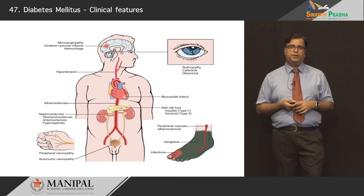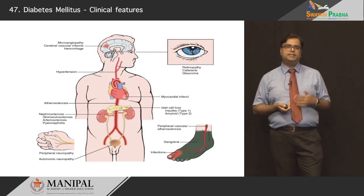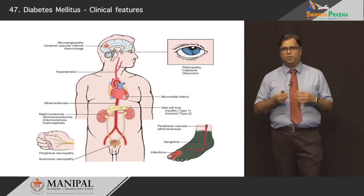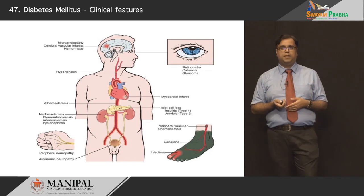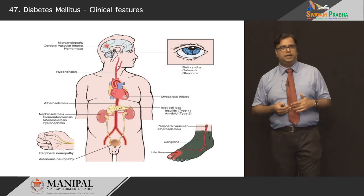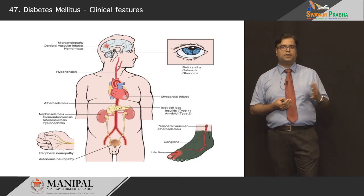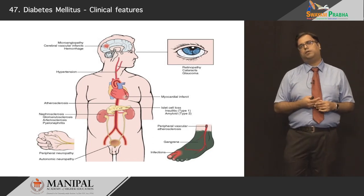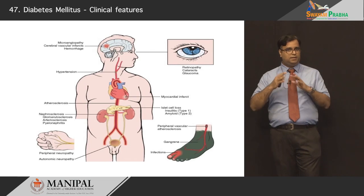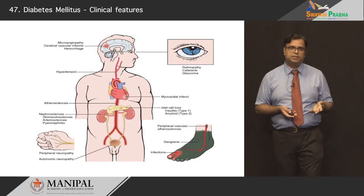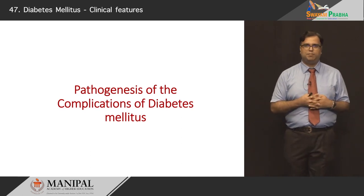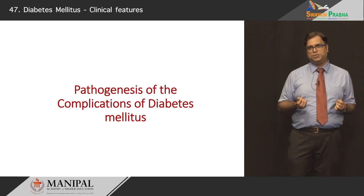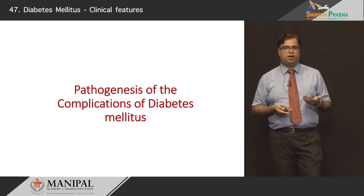A schematic representation shows changes from head to toe — everywhere is affected. At the top, microangiopathy — small vessels which are very leaky and vulnerable — can result in hemorrhages or stroke. In the eye it can result in retinopathy. It can affect the heart, cause amyloid deposition in the pancreas. In the hands it can cause sensory-motor neuropathy. In the bladder it can cause autonomic neuropathy. In the legs it can cause gangrene. So any part of the body can be involved in diabetes mellitus.